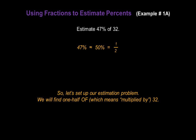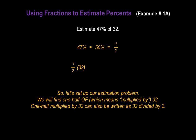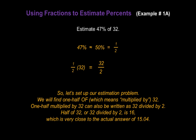So let's set up our estimation problem. We will find one half of — which means multiplied by — 32. One half multiplied by 32 can also be written as 32 divided by 2. Half of 32, or 32 divided by 2, is 16, which turns out to be very close to the actual answer of 15.04.